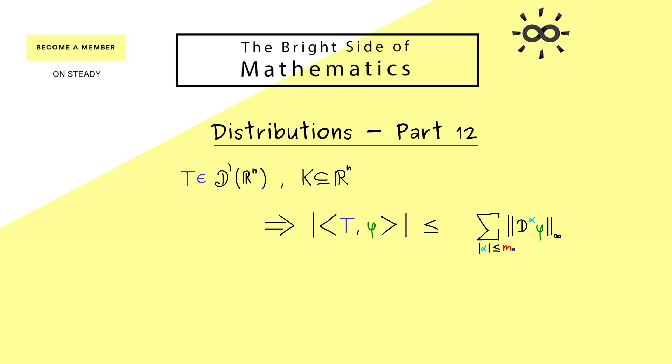Namely the supremum norm of ∂^α of φ. However, you also see we have a maximum order for the partial derivatives here and we call this number m. And indeed for a distribution T such a number m always exists. And moreover we also have a constant c involved which is in front of the whole sum.